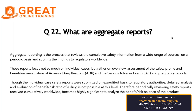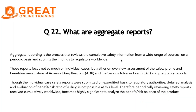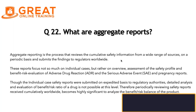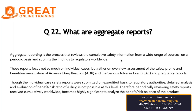Aggregate reporting is the process which reviews the cumulative safety information from a wide range of sources on a periodic basis and submits the findings to the regulatory authorities worldwide. ICSR processing is completely about the single patient, whereas aggregate reporting is about the product.